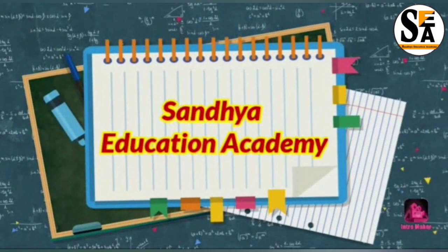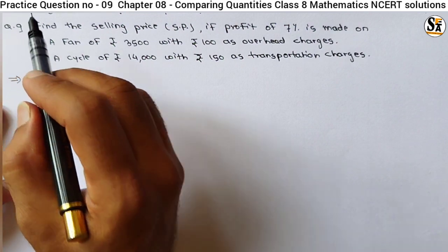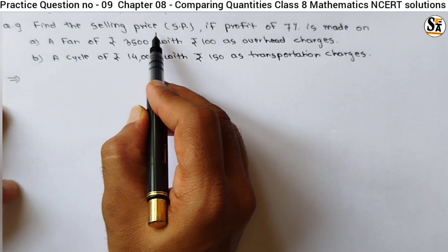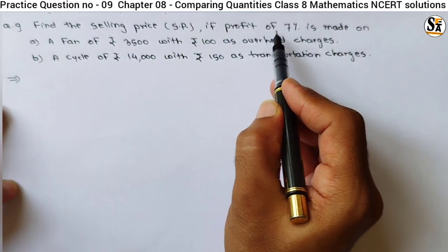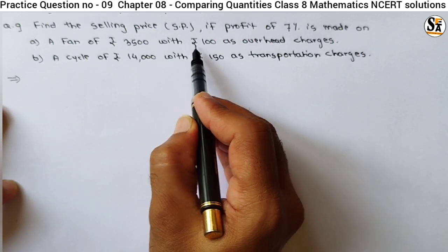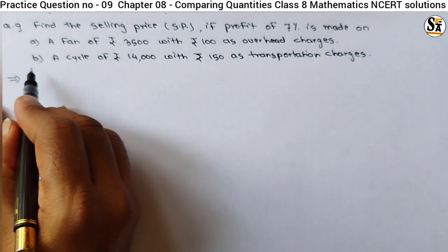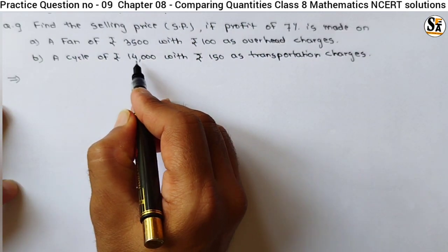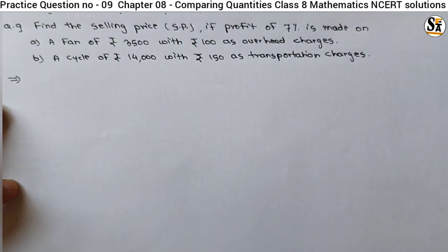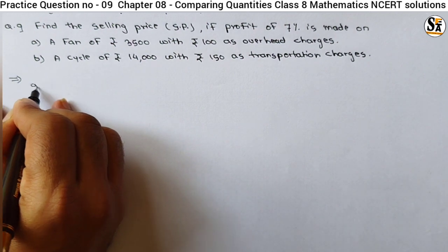Hello dear all, welcome to Sunday Education Academy. I am Santosh. See practice question number nine for chapter Comparing Quantities, Class 8 Mathematics. The question is: find the selling price (SP) if a profit of seven percent is made on a fan of rupees 3500 with rupees 100 as overhead charges, and a cycle of rupees 14000 with rupees 150 as transportation charges.